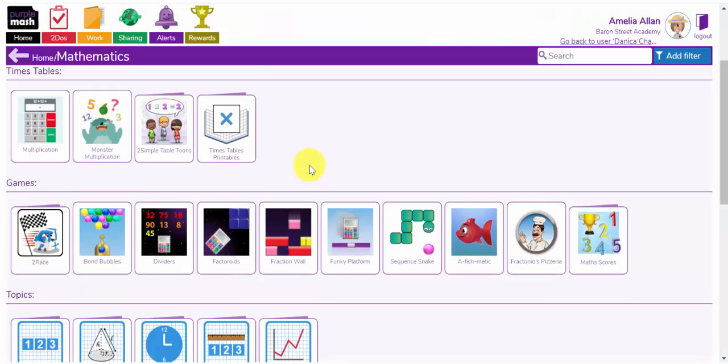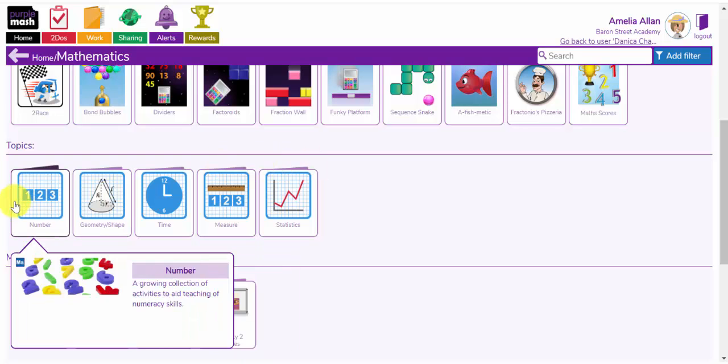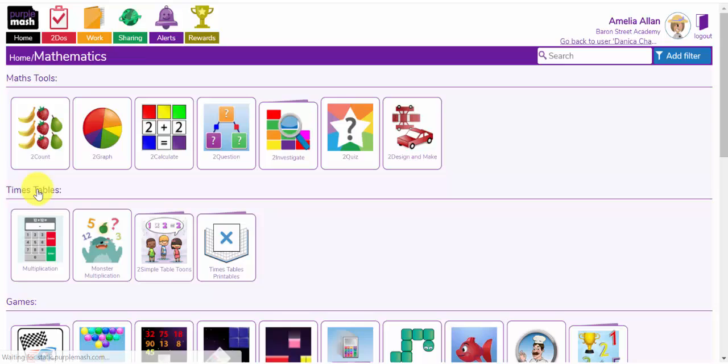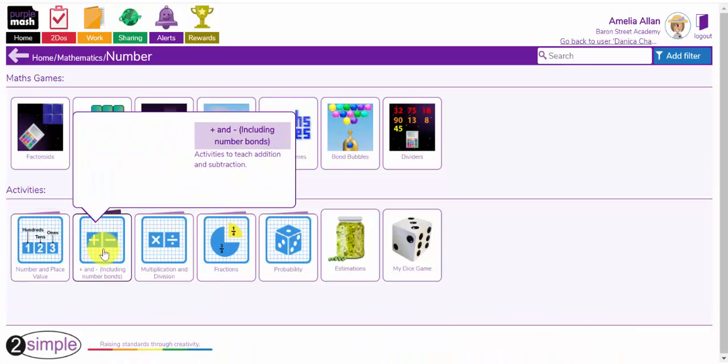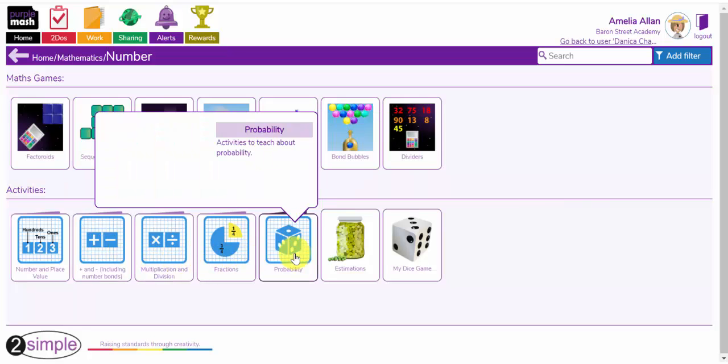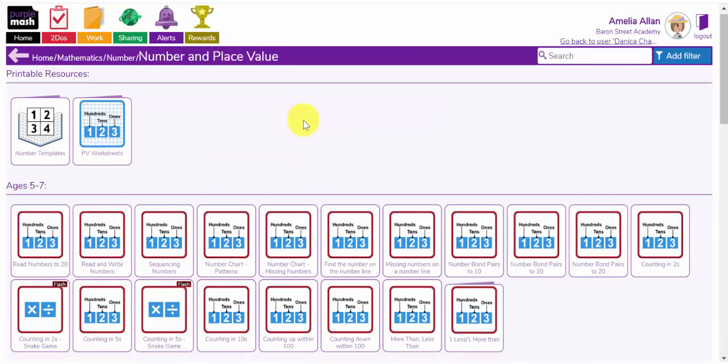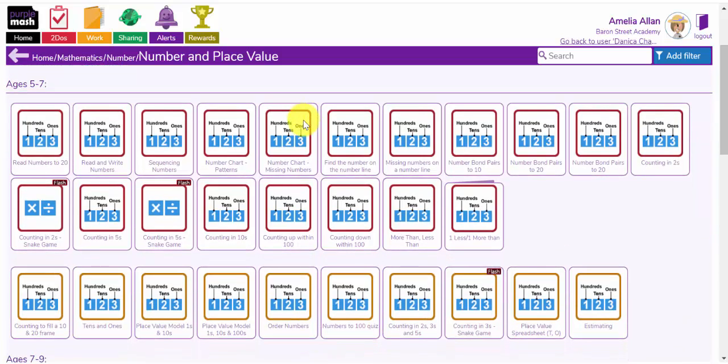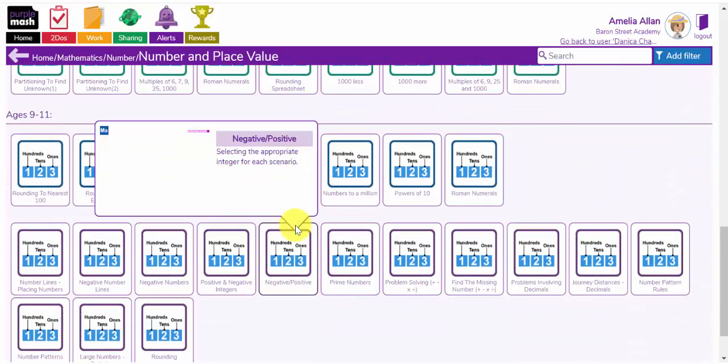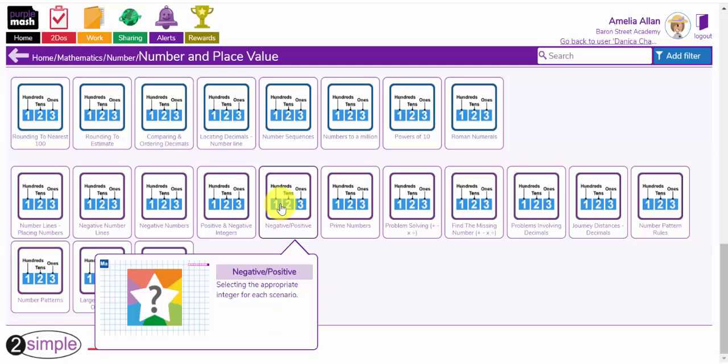I'm now back on the mathematics topics page. And if I scroll down, I'm going to now look at some of these topics resources. There are topics here for number, geometry and shape, time, measure and statistics. Let's have a look at the number topic. I then have further resources here under number and place value, addition and subtraction including number bonds, multiplication and division, fractions, probability, estimations and my dice game. Let's go into number and place value. I now have a number of quizzes and activities grouped into the ages of children. So here are those for ages 5 to 7, 7 to 9 and underneath 9 to 11. So this is year 5 and 6. Let's have a look at this one for example, negative and positive numbers. This is a quiz that the children can answer.